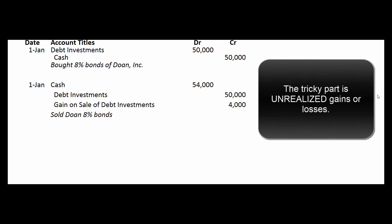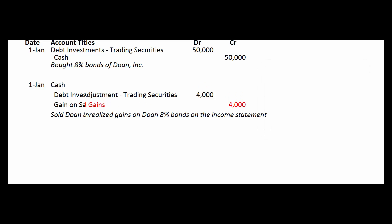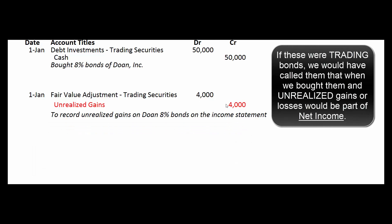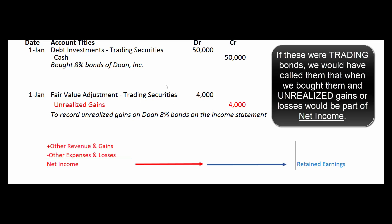But now let's pretend we don't sell them. On January 1st the bonds go up in value by $4,000 — we have an unrealized gain. We'll adjust them on our balance sheet to fair value with a $4,000 debit, increasing the value on our books, and we'll book a $4,000 gain. If these were originally booked as a trading security — we told the world we're smart, we can buy and sell these things and make money — we have to put our money where our mouth is. That unrealized gain gets to go on our income statement.